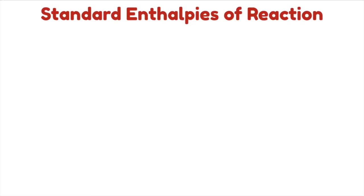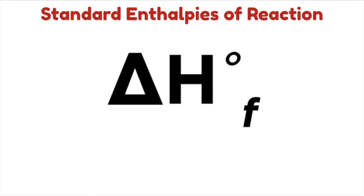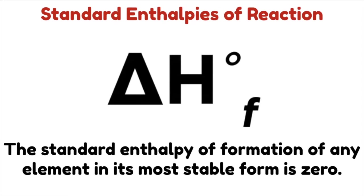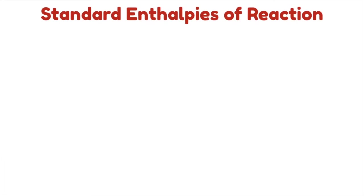The standard enthalpy of formation is the agreed arbitrary reference point for enthalpy, symbolized by ΔH°f. Substances are in the standard state at one atmosphere — the superscript degree sign represents standard state conditions (1 atm), and the subscript f stands for formation. By convention, the standard enthalpy of formation of any element in its most stable form is zero. For example, pure aluminum solid has a standard enthalpy of formation of zero.